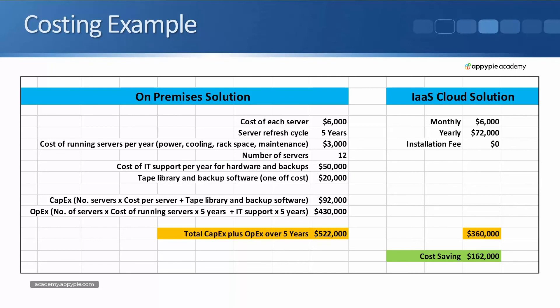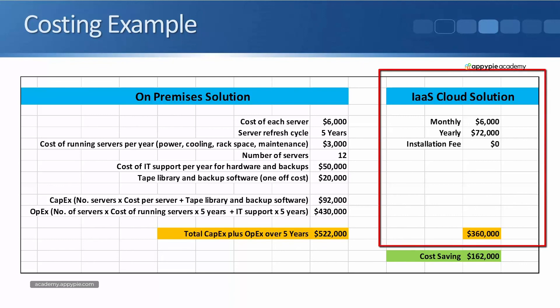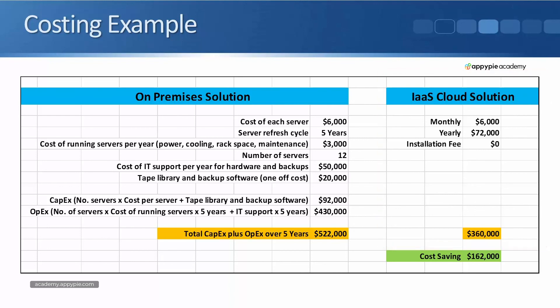Next, we calculate the cost of running the same service in a cloud solution. We look at the monthly cost — the cost of the servers plus any optional extras like additional software fees or additional storage. Our monthly fee is $6,000. Times 12 gives a yearly fee of $72,000, and typically there's no installation fee for a cloud solution. So $72,000 per year times five gives us $360,000. The on-premise solution was $522,000 and the cloud solution is $360,000, giving a cost saving of $162,000 over five years by going with the cloud.